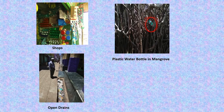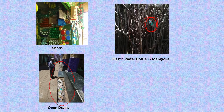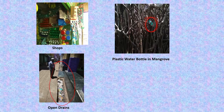Plastic is found choking many drains. This picture is from one of the towns in southern India, but it is typical of many towns across the country. This plastic choking the drains prevents floodwaters from flowing easily, and even a small amount of rain can cause local flooding because of plastic in the drains.